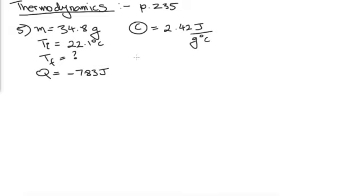Perfect. Now we know that our formula is Q equals m times c times delta T, which is equal to m times c times Tf minus Ti.